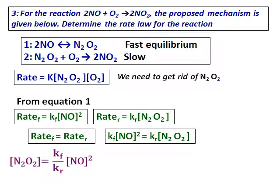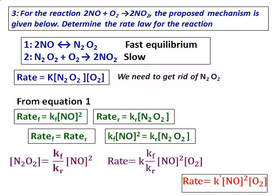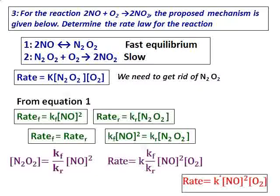Substituting into the rate equation gives: rate = K·(Kf/Kr)·[NO]²[O₂]. Since K, Kf, and Kr are all constants, they combine into one constant K′. Therefore, rate = K′[NO]²[O₂]. This means the reaction is second order with respect to NO and first order with respect to oxygen.